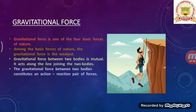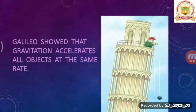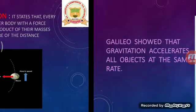We have a common understanding that a heavier object falls faster than a lighter object when both are thrown from the same height, but Galileo proved this is not correct. He showed that gravitational acceleration accelerates all objects at the same rate — that is, acceleration due to gravity, small g. The value of acceleration due to gravity is 9.8 meters per second squared, or nearly equal to 10 meters per second squared, and all objects accelerate at this same rate.